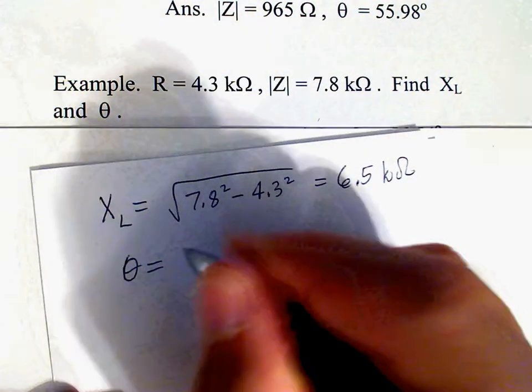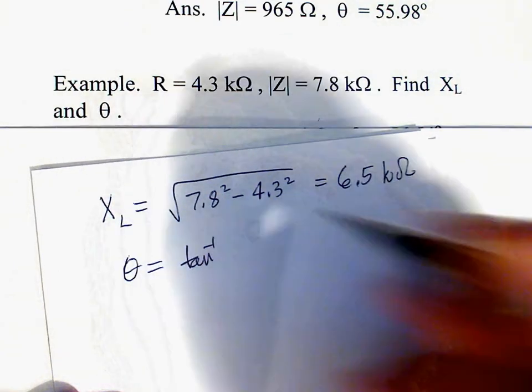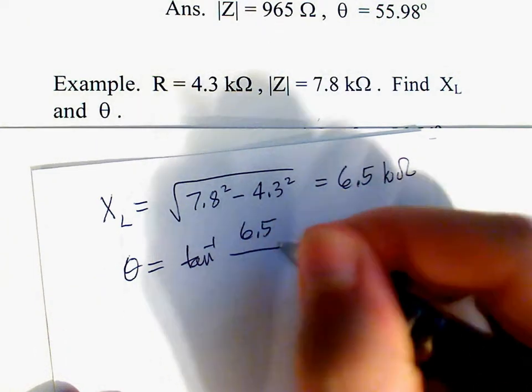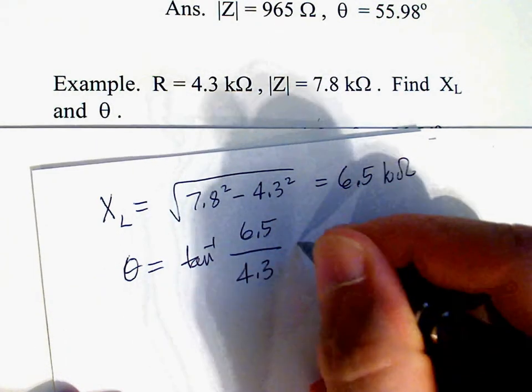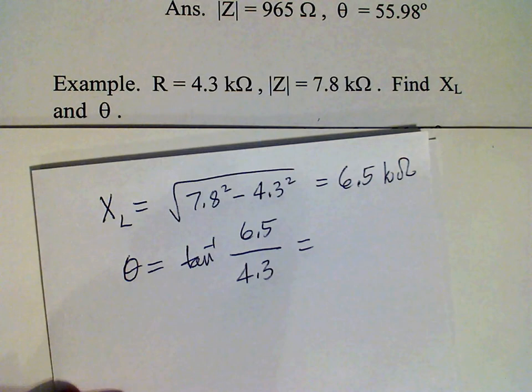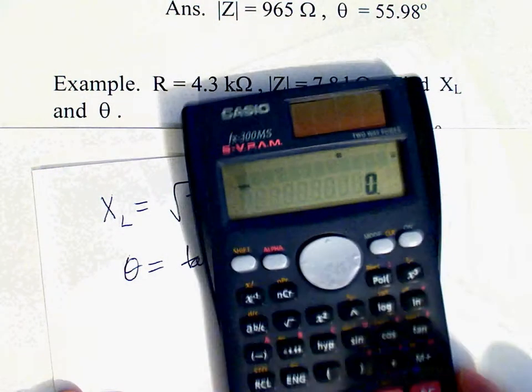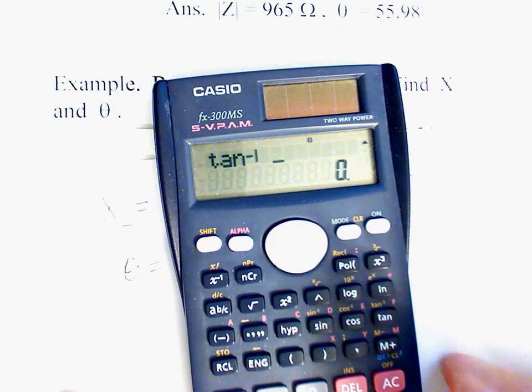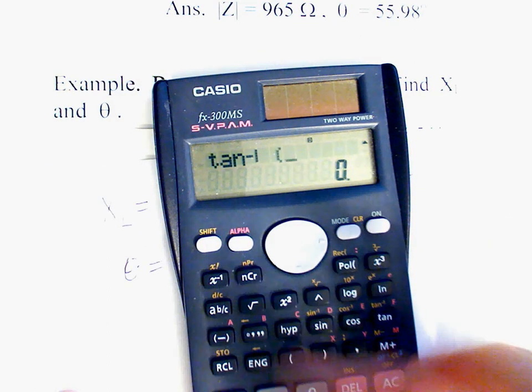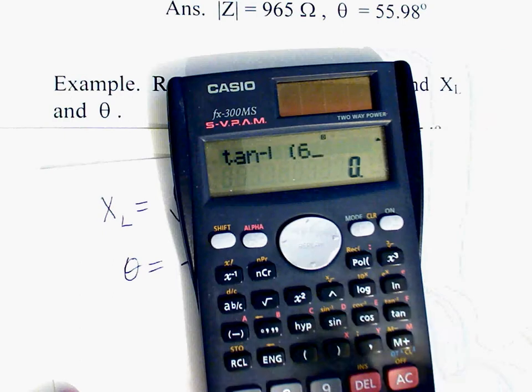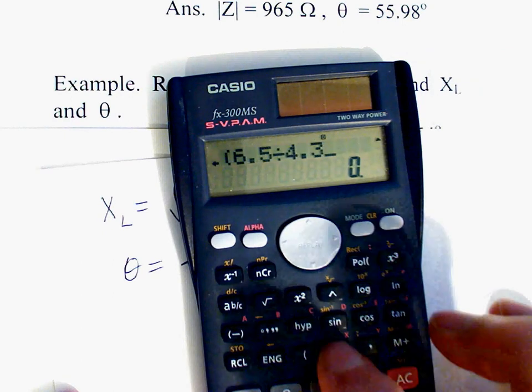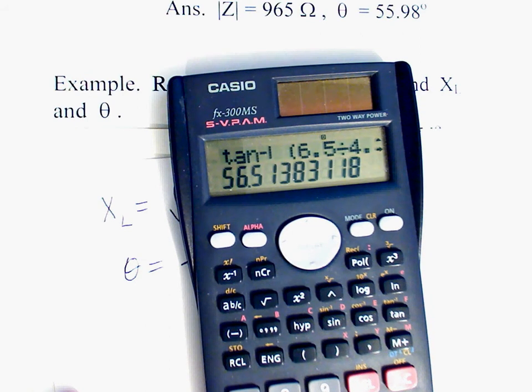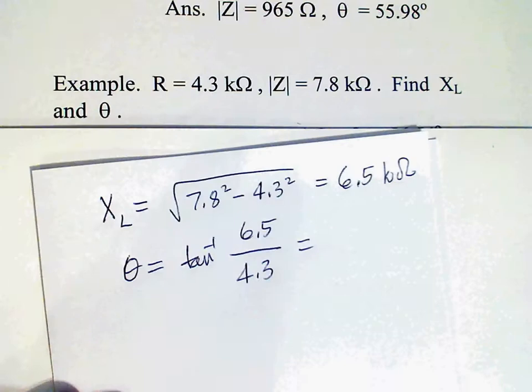Okay, now theta inverse tangent XL over R. And the answer is about 56.5 degrees, and it is very easy.